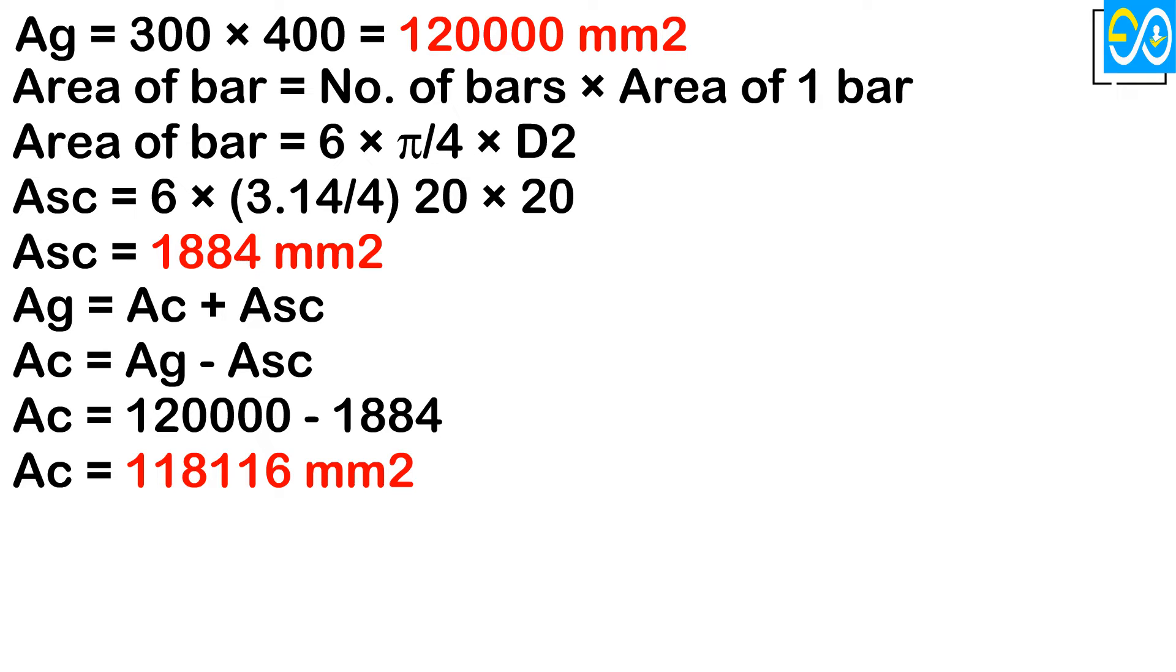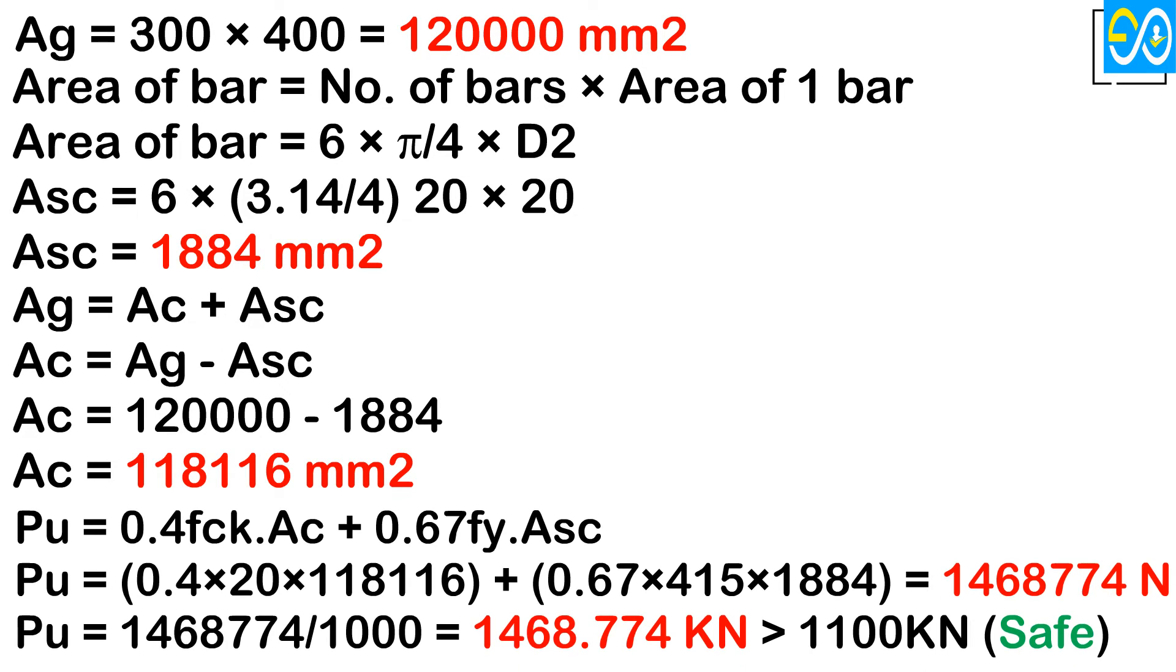Putting all the values in the formula for the axial load-carrying capacity of the column: Pu equals 0.4 fck times Ac plus 0.67 fy times Asc. Pu equals 0.4 times 20 times 118,116 plus 0.67 times 415 times 1884 equals 1,468,774 newtons. Converting into kilonewtons, we divide by 1,000. Pu equals 1,468.774 kilonewtons, which is greater than 1100 kN, therefore safe.